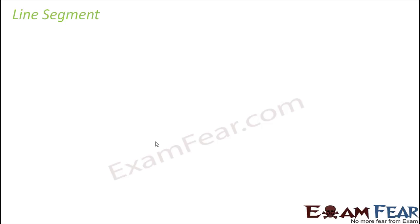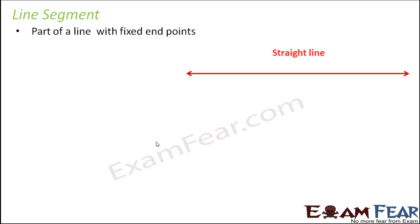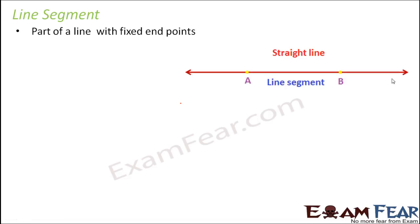Now that we have understood how to draw a circle, let's talk about line segments. A line segment is a part of a line with fixed endpoints. A line is a combination of points which extends infinitely in both directions, but a line segment is just a portion of the line with fixed endpoints. As you can see on the screen, AB is not a line but a line segment because it is just a portion of the line with fixed endpoints A and B.